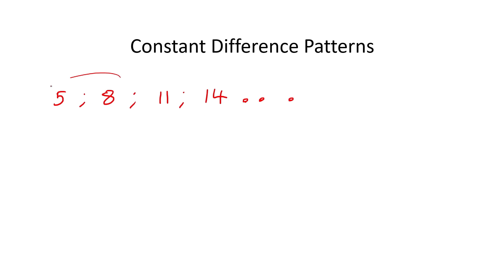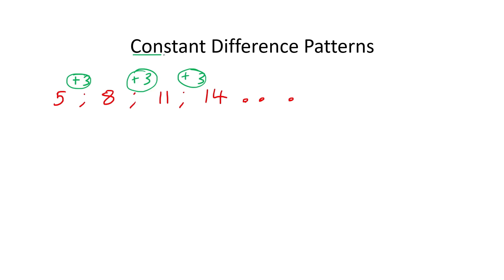We call it a pattern because it's just a whole bunch of numbers, but can you see what the pattern actually is? You can see here that we are adding three each time. So because we're adding — or it could also be subtracting — if we're adding the same amount, we call that a constant difference pattern.